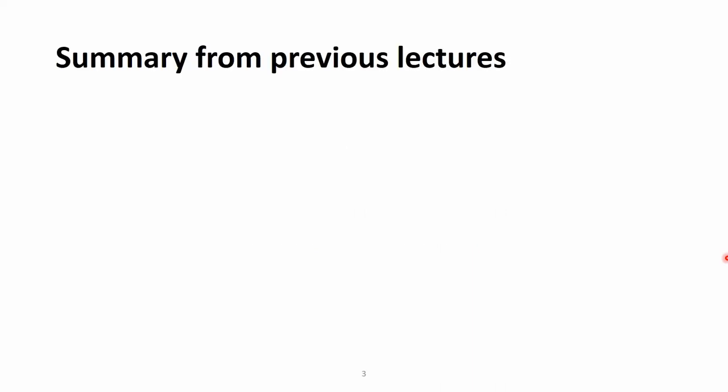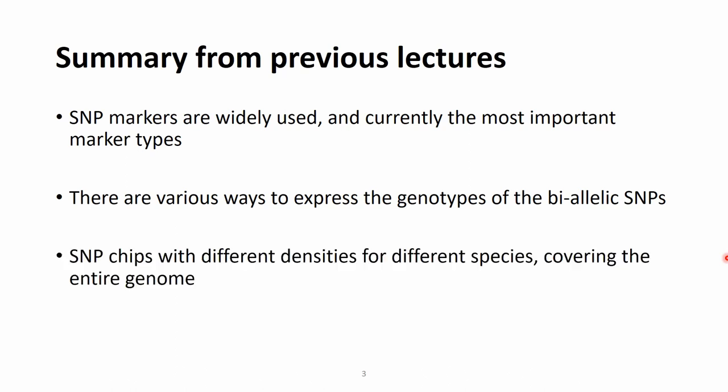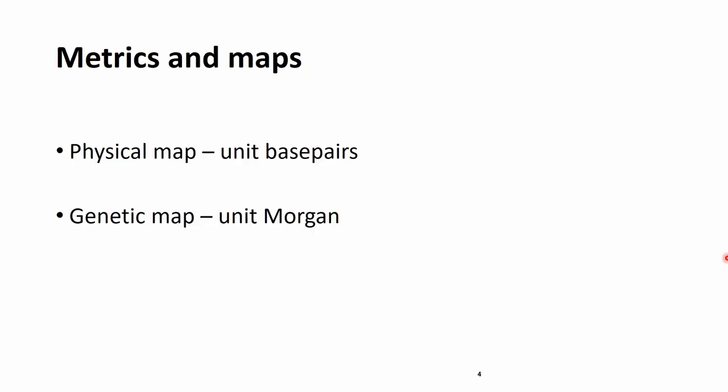Before we move forward, there is a short summary from the previous lectures. We talked about SNP markers and the fact that they are widely used and currently the most important marker types. There are various ways to express the genotypes of these biallelic SNPs that are on the so-called SNP chips. These SNP chips are of different densities that were created for different species and cover the entire genome. One of the key features of these SNPs is that we know their location. In other words, we have a map file available. Here I would like to talk a bit more on these metrics and maps associated with SNP positions.